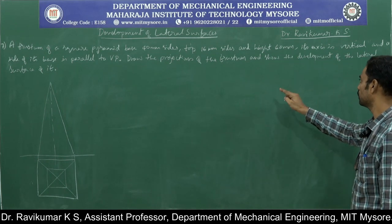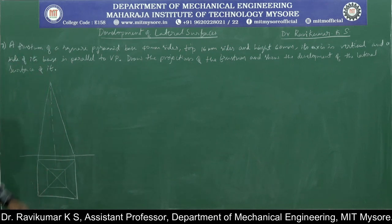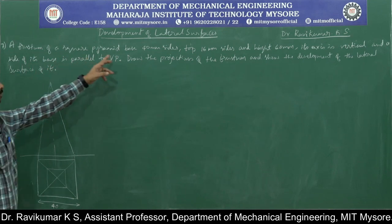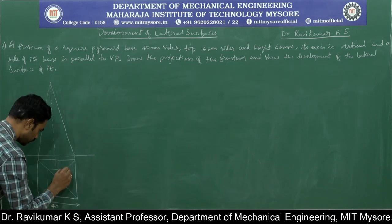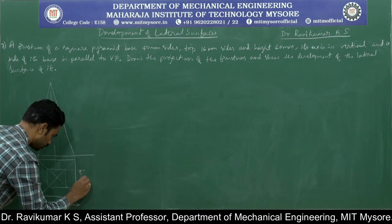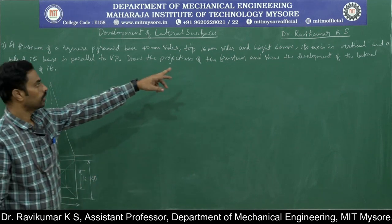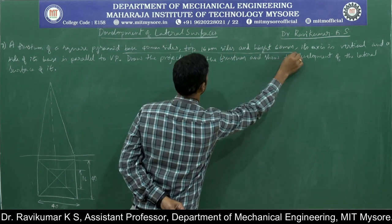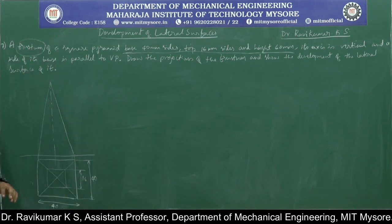Draw the projections of the frustum and show the development of its lateral surface. This is the top view and front view of the problem. The base is 40mm, the top is 16mm. You must understand that the three dimensions — 40mm, 16mm, and 60mm — are given with respect to the frustum, not the full height of the pyramid. The height 60mm is the frustum height, not the axis height of the complete pyramid.